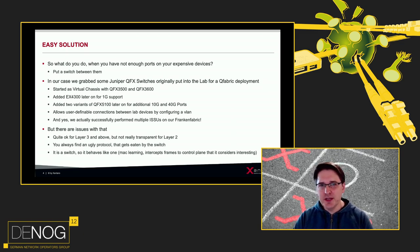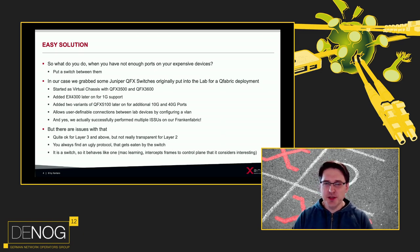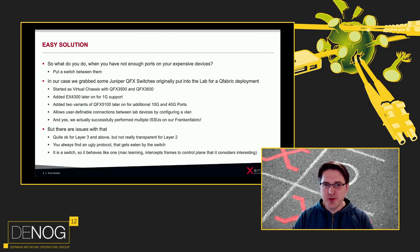That works quite well for layer 3 and above, but there are some challenges as soon as you get to layer 2, where you always find some ugly protocols that are not transmitted by the switch — they're actually consumed by the switch because it considers those frames interesting, intercepts them, and sends them to the control plane. The other problem is that it is a switch so it behaves like one; it's not really transparent, and even though you have tunneling possibilities for different protocols, you always find one where it either doesn't work or just isn't implemented.